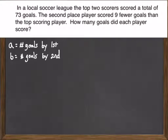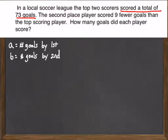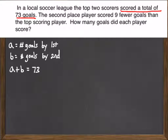We then look for information in the problem that relates the number of goals by the two players. They scored a total of 73 — the word 'total' means addition. If we take the goals by the first player plus the goals by the second player, we should get 73. So we have one equation: A plus B equals 73.